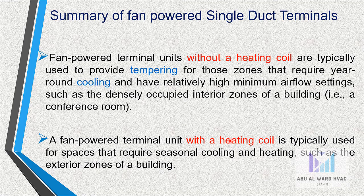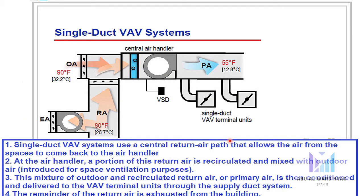A fan powered terminal unit with a heating coil is typically used for spaces that require seasonal cooling and heating, such as the exterior zones of a building. In a single duct VAV system, a central return airflow allows air from the spaces to come back to the air handler. At the air handler, a portion of this return air is recirculated and mixed with outdoor air introduced for space ventilation purposes. This mixture of outdoor and recirculated return air — our primary air — is then conditioned and delivered to the VAV terminal unit through the supply duct system. The remainder of the return air is exhausted from the building.